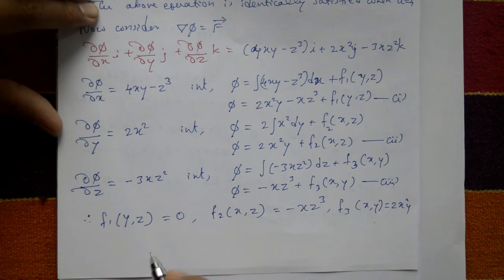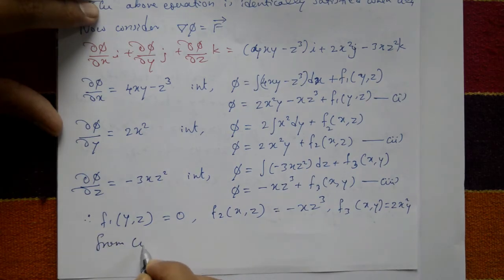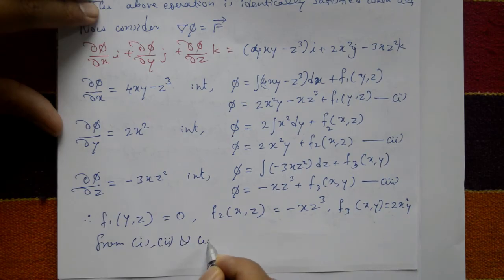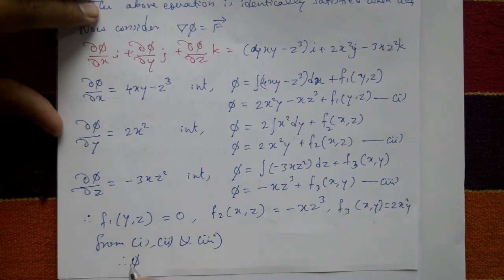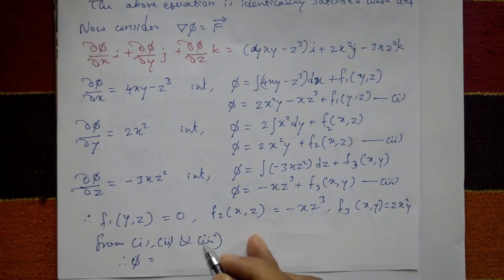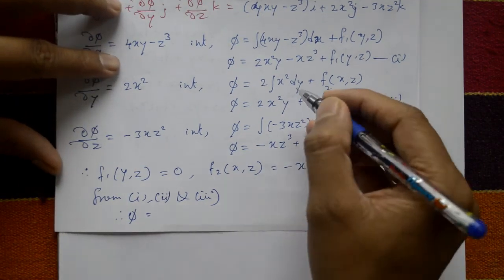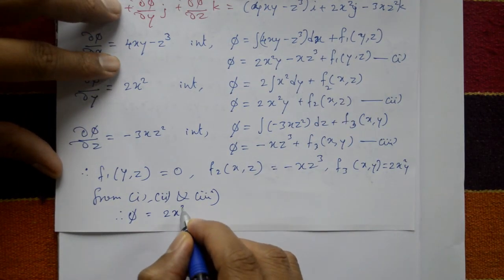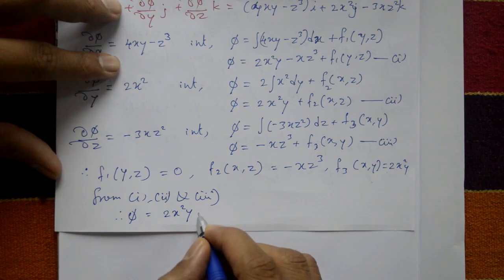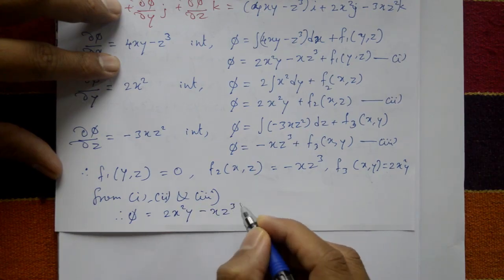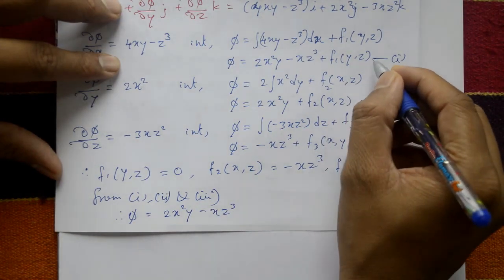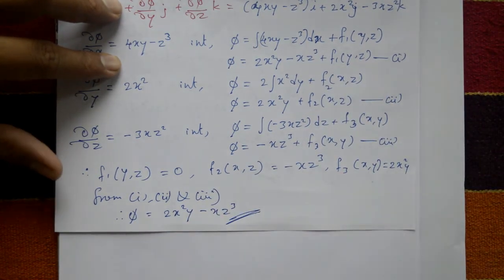From equations 1, 2, and 3, we get phi equals 2x squared y minus xz cubed. This is the required scalar potential function, and this is the solution.